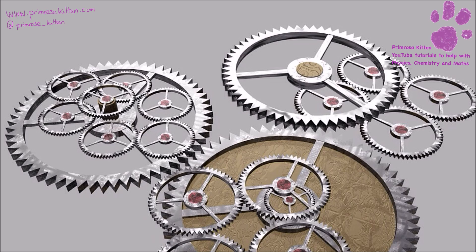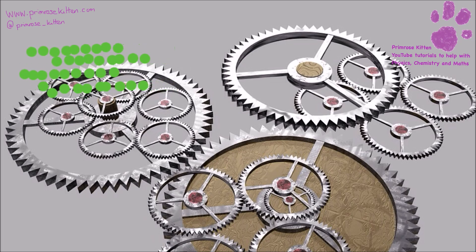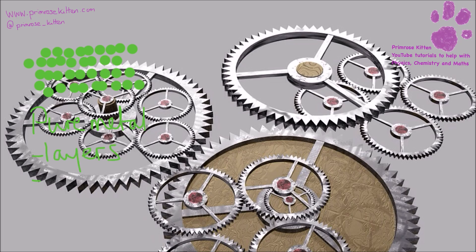Now in a pure metal we have layers, and these layers can slide like this. It's really easy for the layers of metal to slide over one another because all of the atoms, all the particles are the same size. And because we have this sliding, the metal is going to be soft. So pure metals are too soft for most uses.